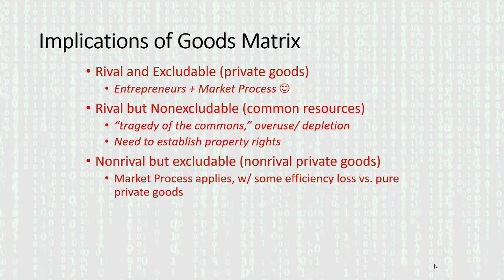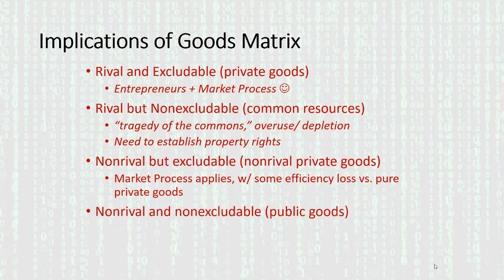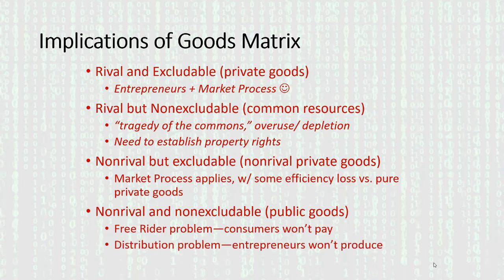Let's move on finally to the fourth kind of good — non-rival and non-excludable — known as a public good. With public goods, we have two big problems. First is the free rider problem: consumers won't pay because the good is not excludable. Why should I pay when I can use it for free? We also have a distribution problem.